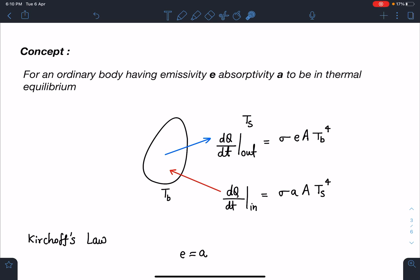In this case, the body will be releasing some amount of energy as per Stephen's law, which is σA·Tb⁴. If it was a black body, but it is an ordinary one, so e will come here: σeA·Tb⁴.